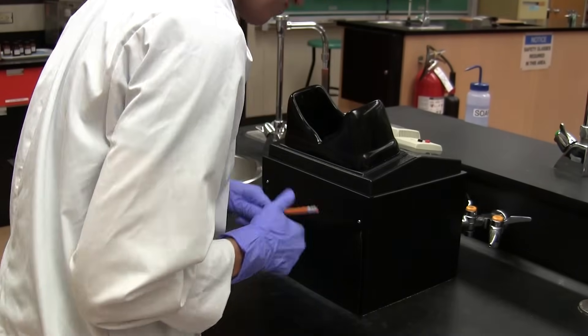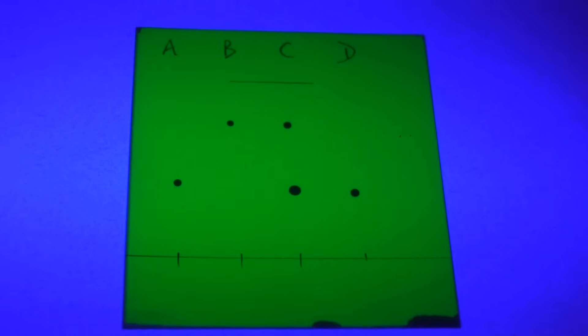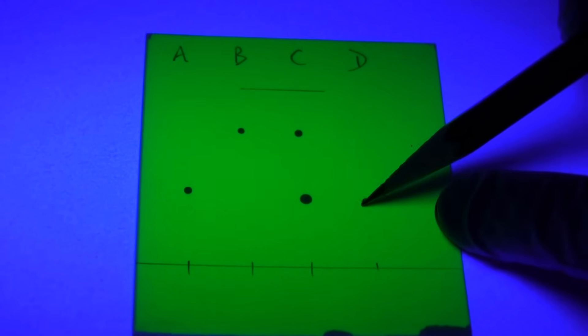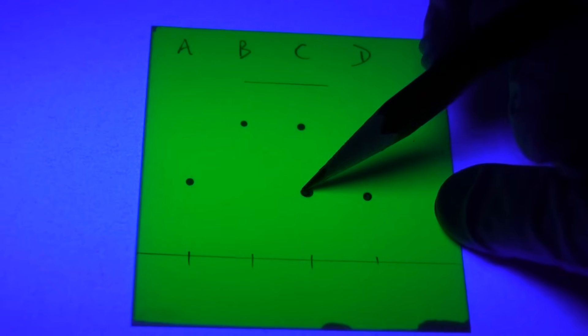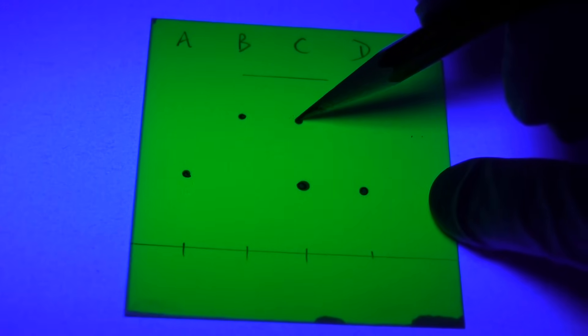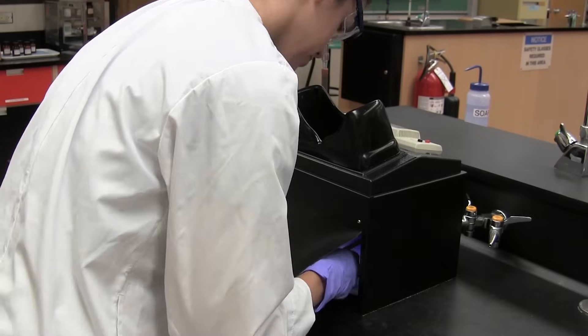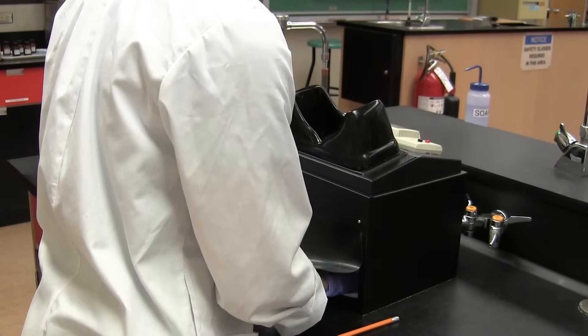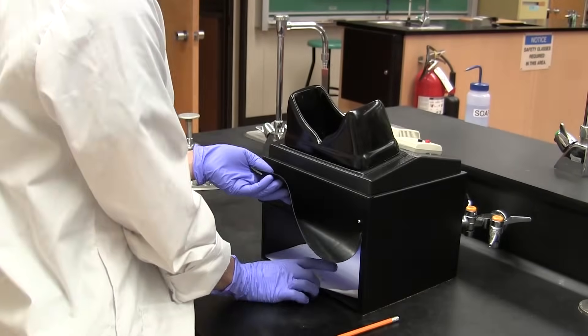So while visualizing the plate under UV, we are now able to outline all the spots with a pencil so that we can locate the spots under visible light. And once all the spots are outlined, we can remove the plate from the UV light box.